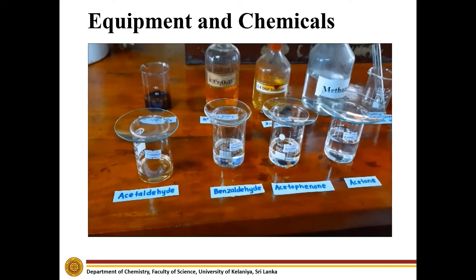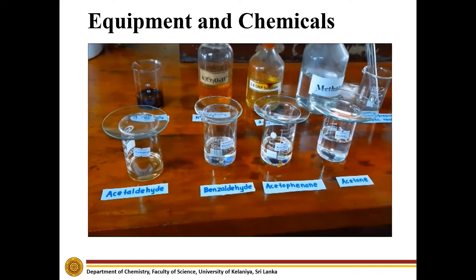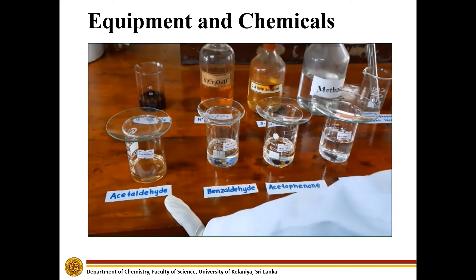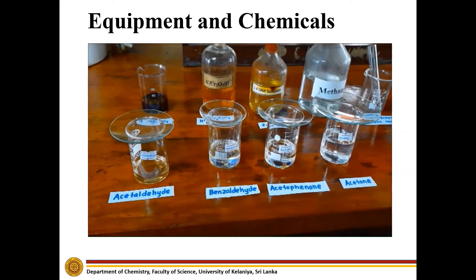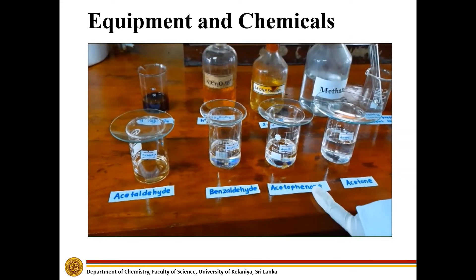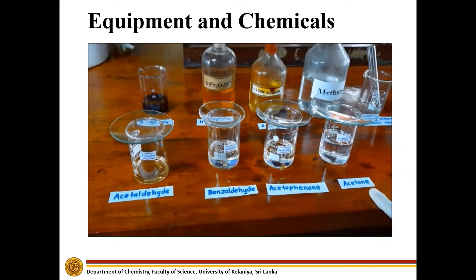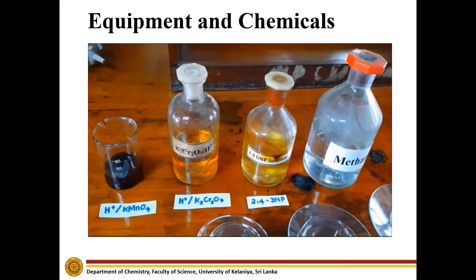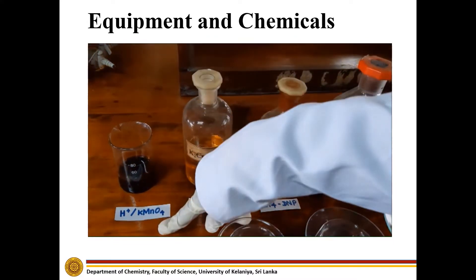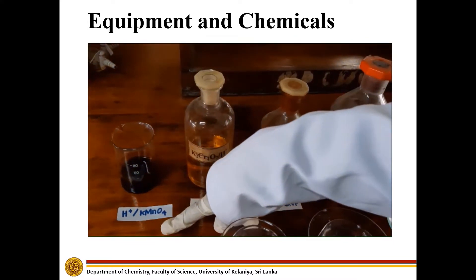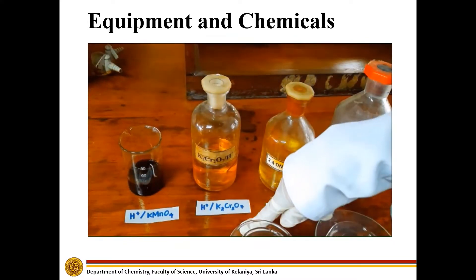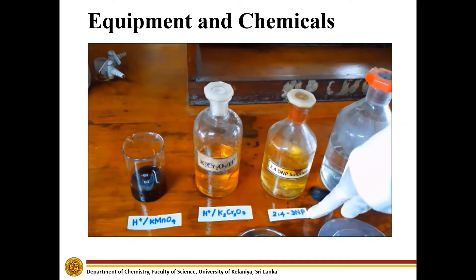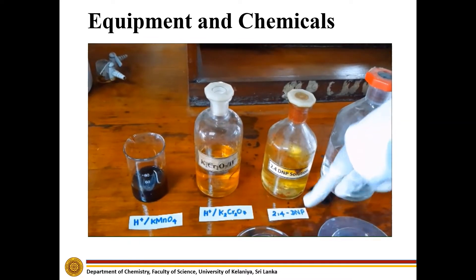For this experiment we use acetaldehyde and benzaldehyde as aldehydes, and acetophenone and acetone as ketones. As the other chemicals we use acidic potassium permanganate, acidic potassium dichromate, and 2,4 DNP.